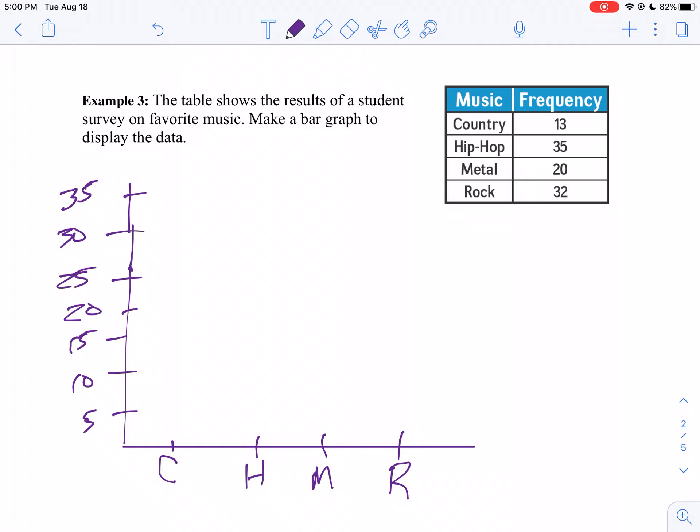So country goes up to 13. Hip hop is 35. Metal is 20. Oops, I went too far for that one. Let's try that again. And finally, rock is 32.